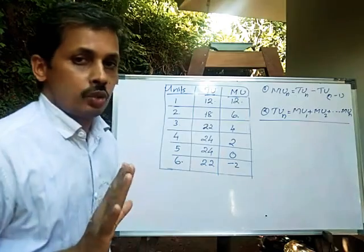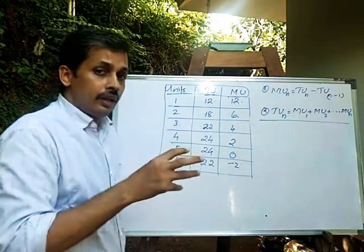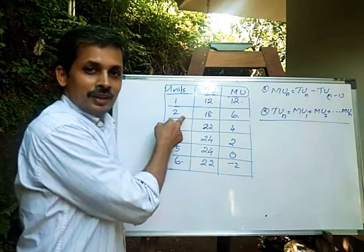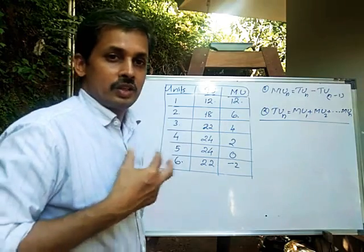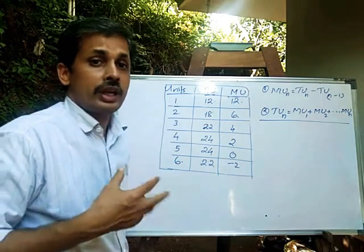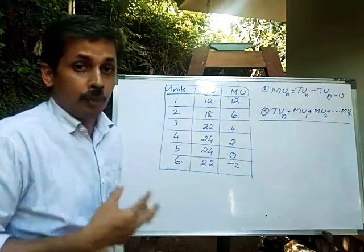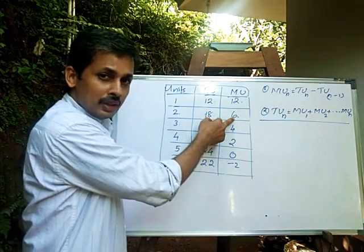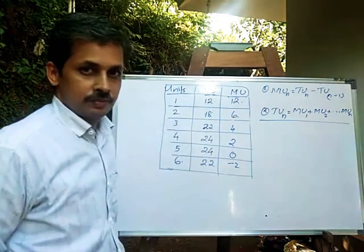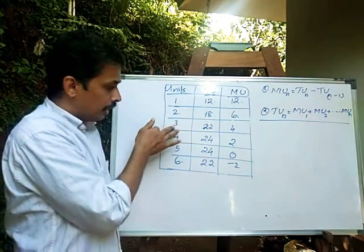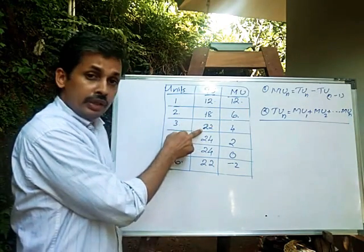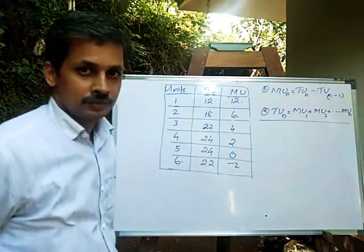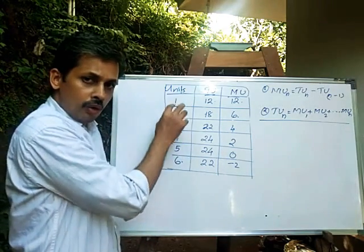When the first orange is consumed, total utility is 12 and marginal utility is 12. When the second orange is consumed, total utility becomes 18 and marginal utility is 6. When the third unit is consumed, total utility is 22.